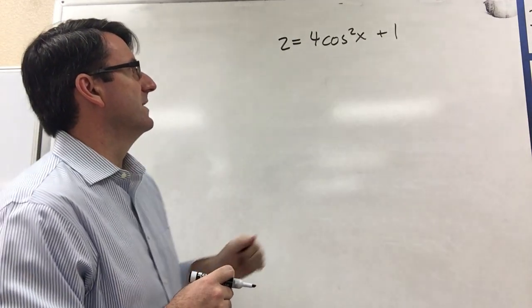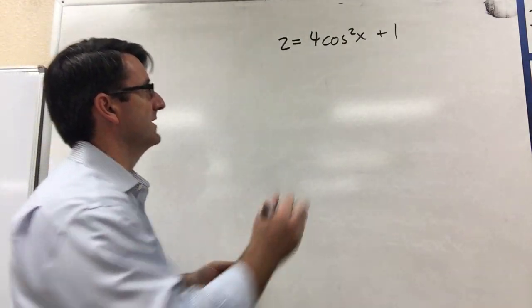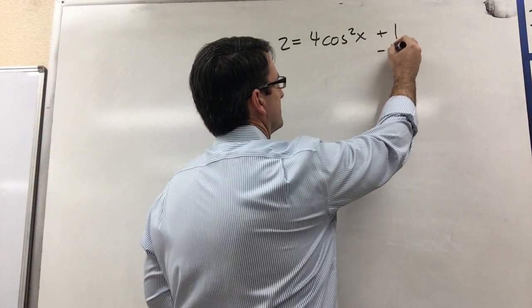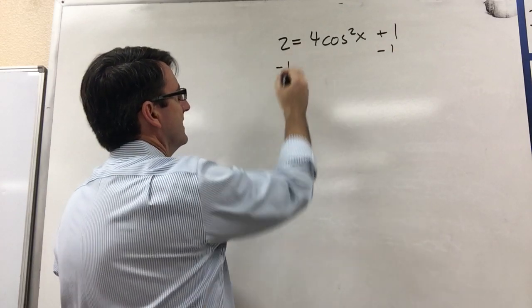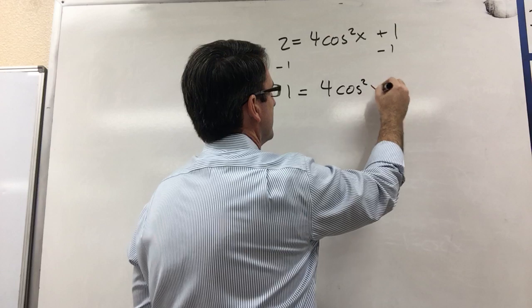Alright, so the easiest way to solve this is probably just to get the constants on one side. So let's subtract 1 from both sides. So we get 1 is equal to 4 cosine squared of x.